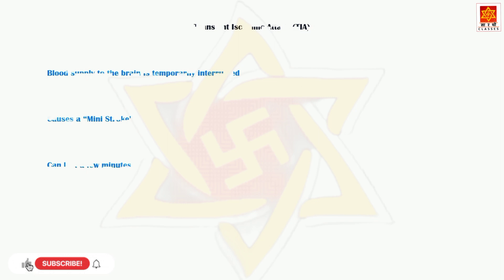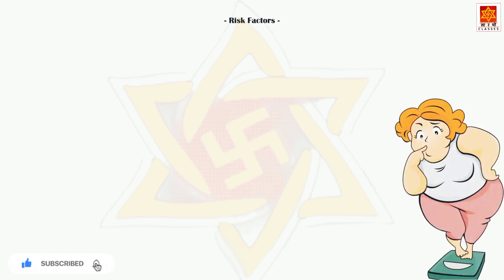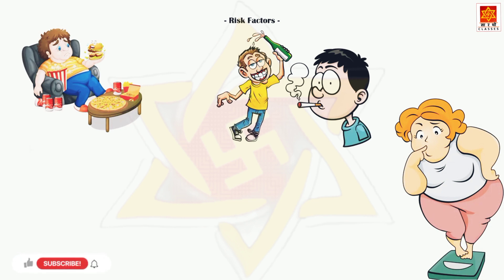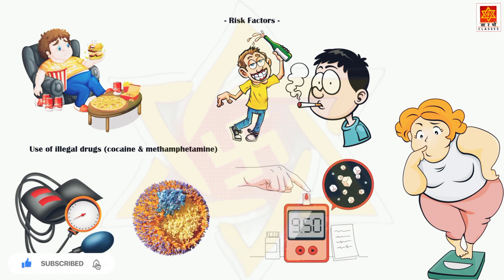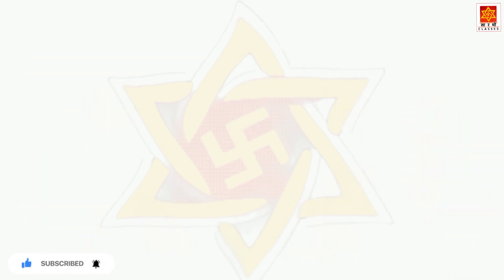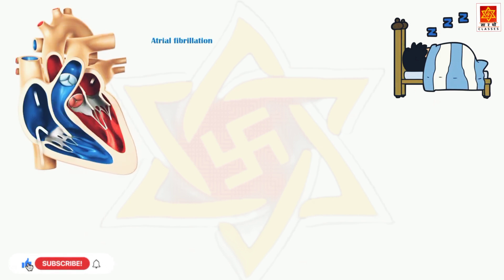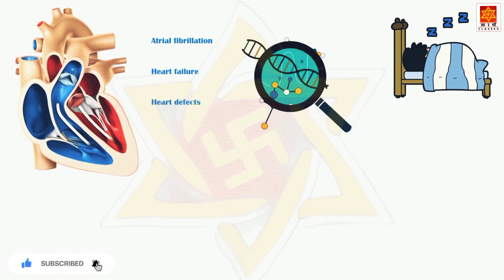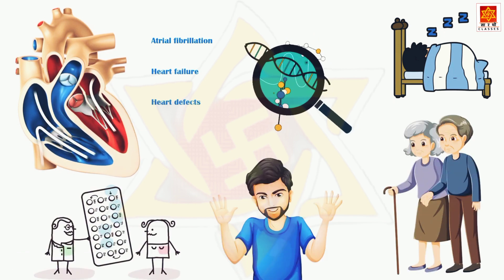Several factors contribute to an increased risk of stroke, including the following: obesity, physical inactivity, alcohol consumption and smoking, use of illegal drugs such as cocaine and methamphetamine, high blood pressure, high blood cholesterol levels, uncontrolled diabetes, obstructive sleep apnea, cardiovascular diseases such as atrial fibrillation, heart failure and heart defects, family history of strokes, increasing age, male gender, and certain medications such as hormonal birth control pills.